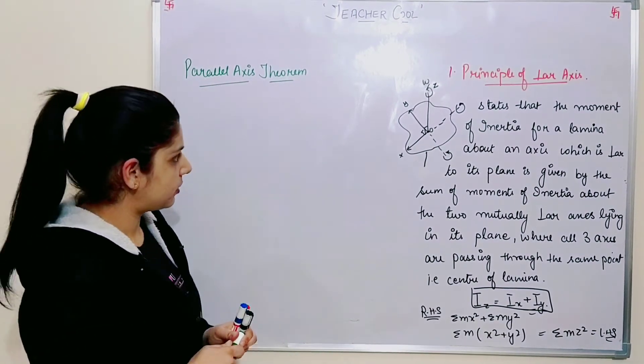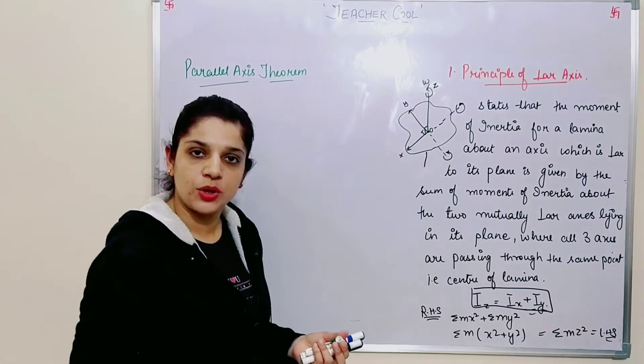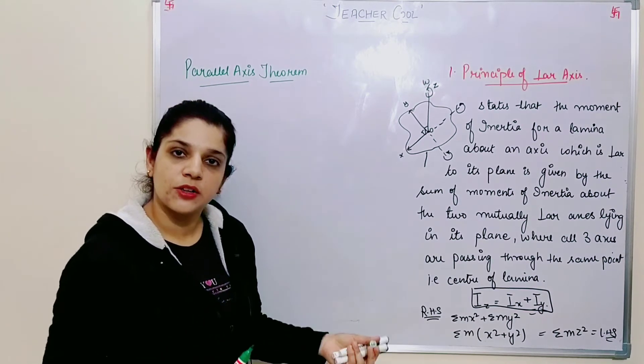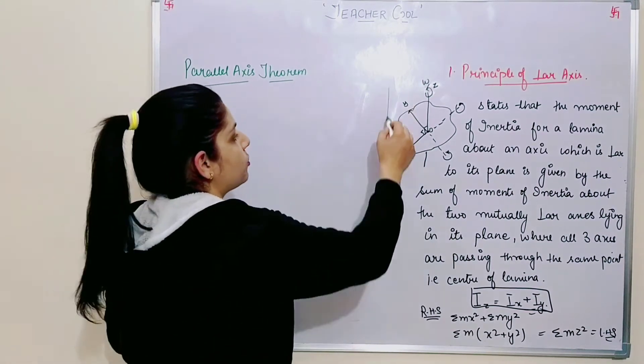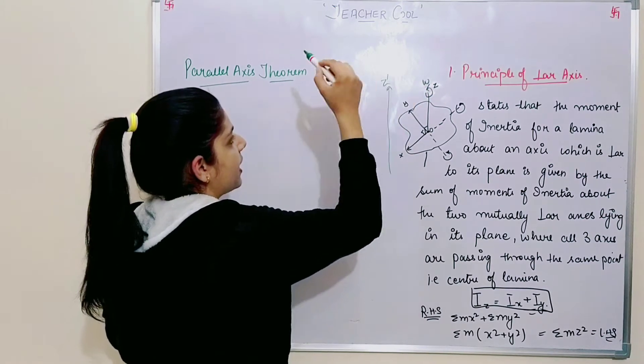If we draw the diagram, let's take this. OZ axis I have already found. OZ, which is the axis, it is passing through the center of mass of the body. Now I have to find along this axis, I'll name it Z dash axis.